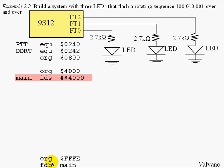The reset vector here is specified to the location main. So the first instruction to be executed will be the one at main, which will load the stack pointer with the number 4000, initializing the stack into the RAM which exists below 4000.